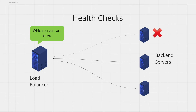Even though we have multiple servers, individually the servers might still go down. Now the question is, how does the load balancer know if any backend server is down? Otherwise, it will forward user requests to servers that are down, which will result in the user seeing an error. To prevent this situation, the load balancer performs something called a health check for every server. Periodically, the load balancer will ping a backend server and expect a response back. If the server does not respond back, it will consider that the server is down and stop forwarding requests to that server.